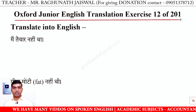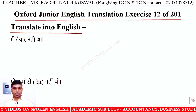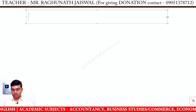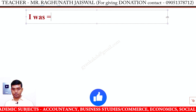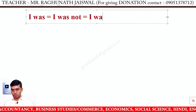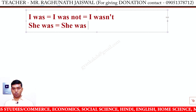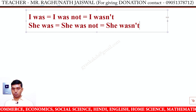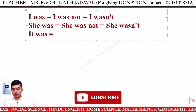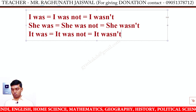Oxford Junior English Translation Exercise 12 of 201 — Translate into English. In this set, we are going to do negative sentences in past tense. I ke saath 'was' hota hai, negative mein hoga 'I was not', short form 'I wasn't'. He ke saath 'was' hota hai — 'he was not', short form 'he wasn't'. It was not, short form 'it wasn't'.